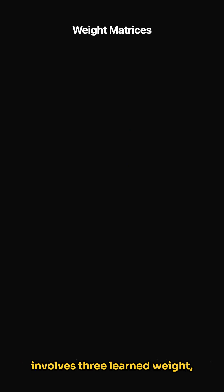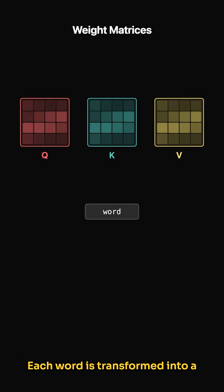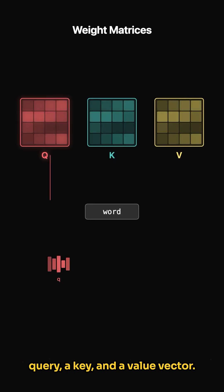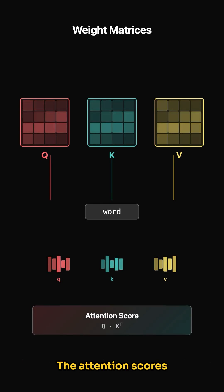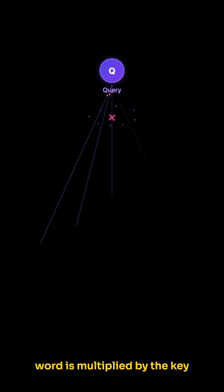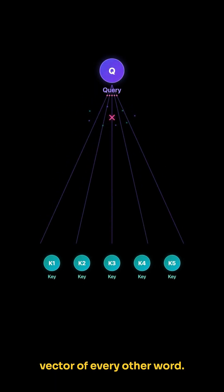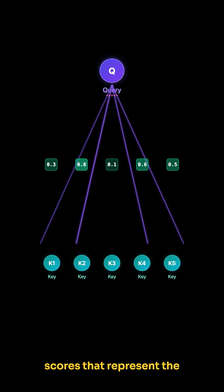Technically, this scoring involves three learned weight matrices: query, key, and value. Each word is transformed into a query, a key, and a value vector. The attention scores are derived from the query and key vectors. The query vector of one word is multiplied by the key vector of every other word. These multiplications produce the attention scores that represent the relationships between words.